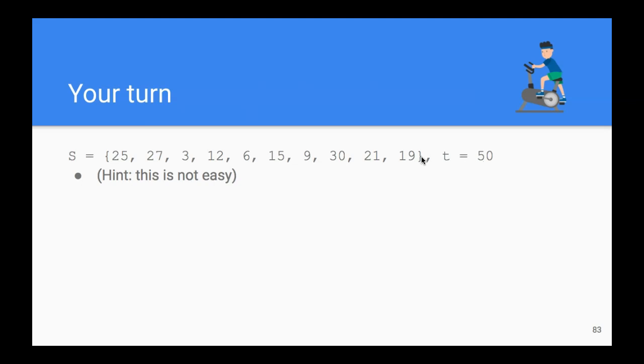As a matter of fact, the solution is that we can find a subset that is exactly 50. Give this a try, and if it takes a while, it's okay because it's not that easy. Here is the solution: 25, 6, and 19, and they add up to exactly 50.